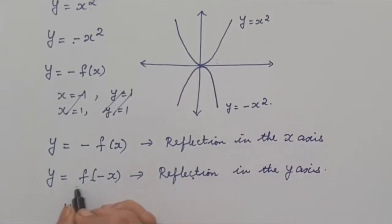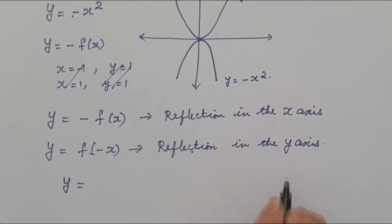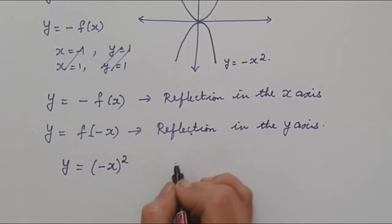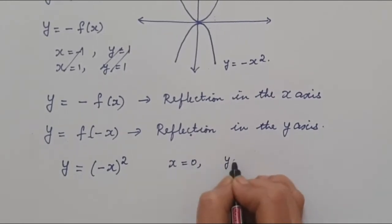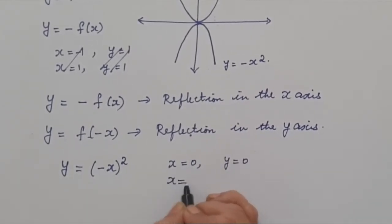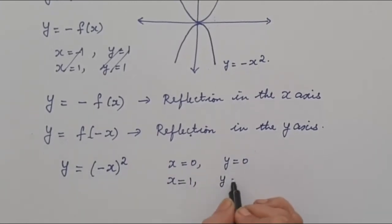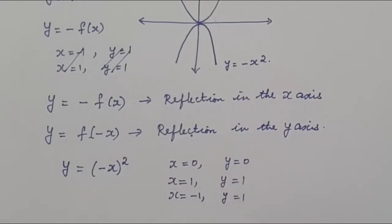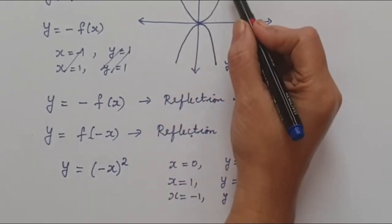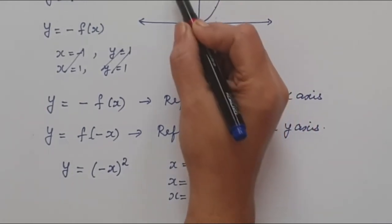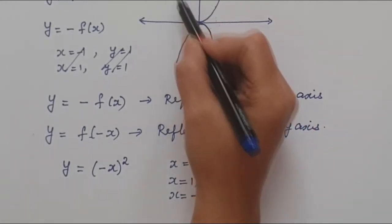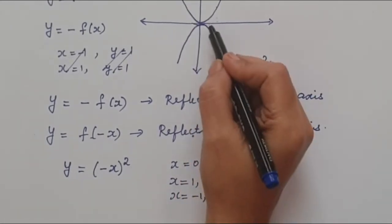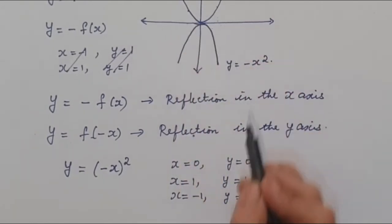We will check whether f(-x) is indeed a reflection in the y-axis. Taking y = (-x)²: when x = 0, y = 0. When x = 1, y = 1. When x = -1, y = 1. So this part of the curve gets reflected, and that part gets reflected, and we are left with the same graph. That is, x = 1 gives y = 1 and x = -1 gives y = 1, confirming it is a reflection in the y-axis.